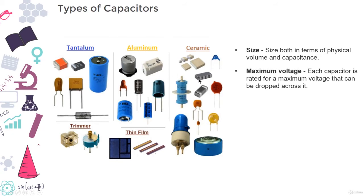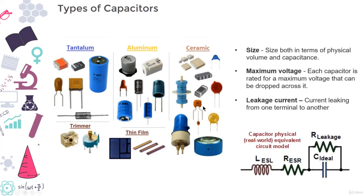The next factor to consider is the leakage current. Capacitors are not perfect. Every capacitor is prone to leaking some tiny amount of current through the dielectric, from one terminal to another. And this tiny current loss, which is usually nanoamps or less, is called leakage current. Leakage causes energy stored in the capacitor to slowly but surely drain away.